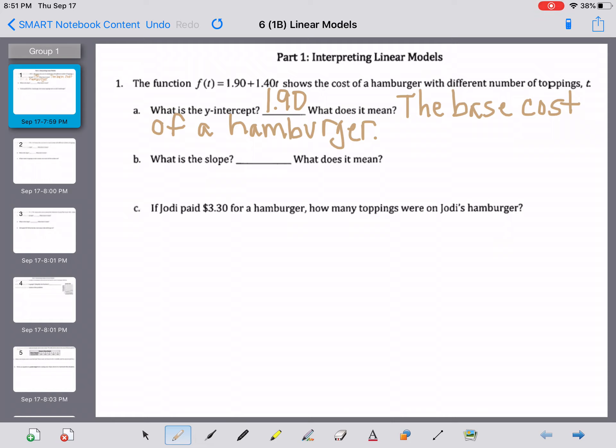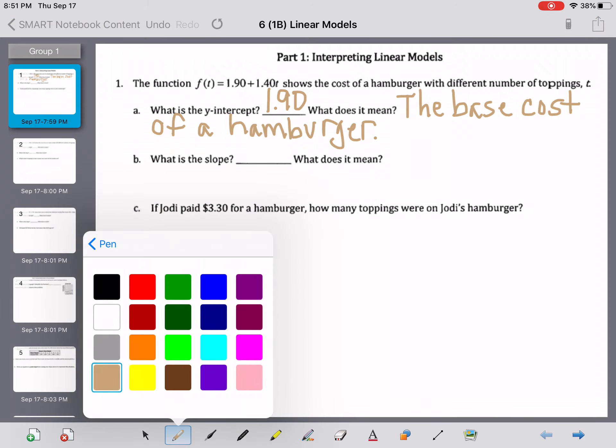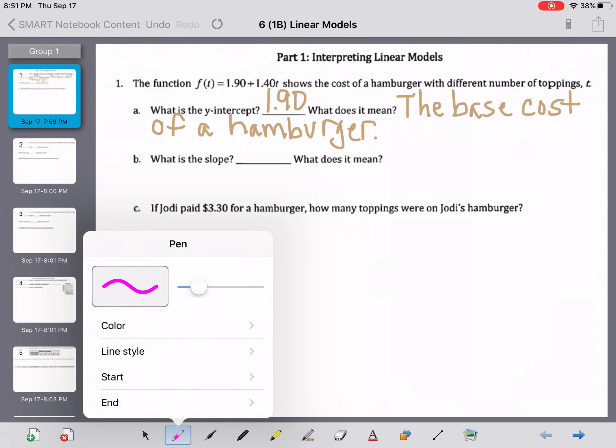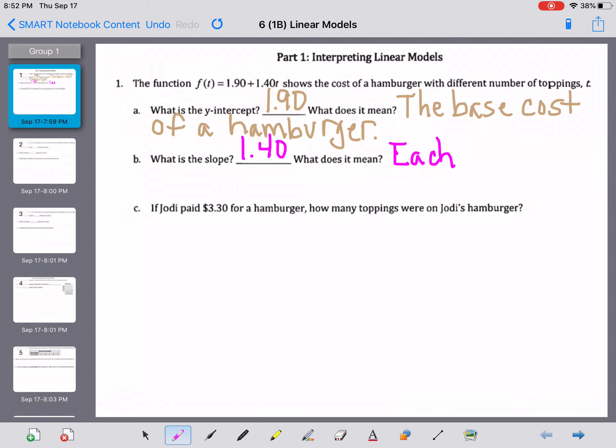Since 1.90 is the y-intercept, our other value in our problem must be the slope, which is what our second question is. When we answer this question, what is the slope? It's going to be 1.40. And what this means is that each topping costs $1.40.